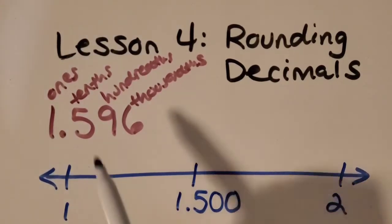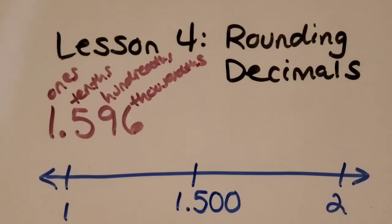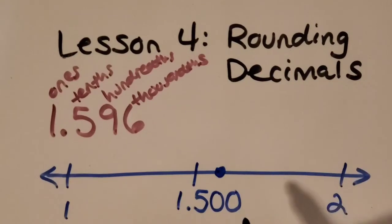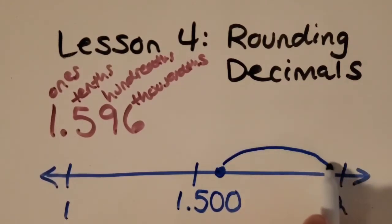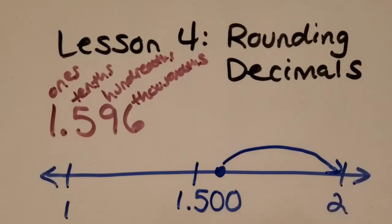So where do you think our example would fall on the number line? Okay, good job! Somewhere over here, so on this side. So then you just ask yourself if we're rounding that number to the nearest whole number, you can ask yourself is it closer to one whole or two whole? All right, good job! It's closer to two whole. So if I asked you to round to the nearest whole number, you would say two.